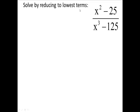Solve by reducing to the lowest terms: x squared minus 25 over x cubed minus 125.